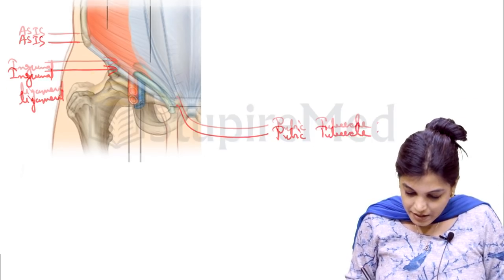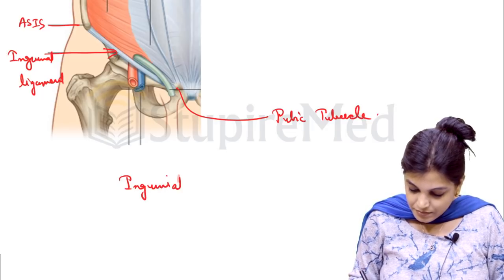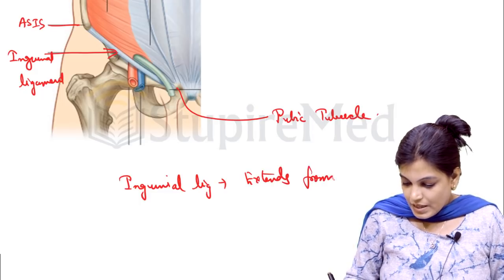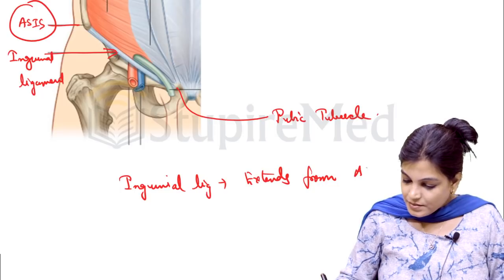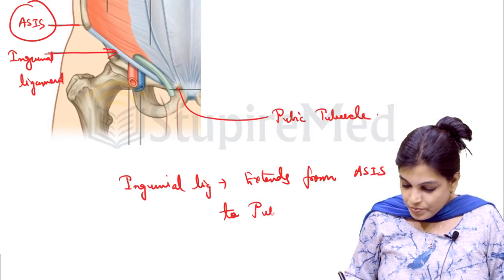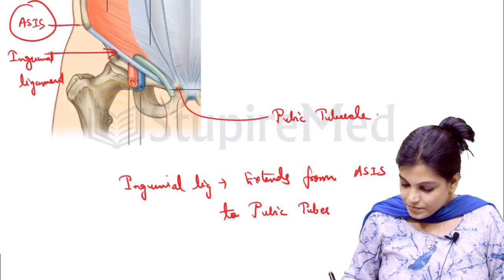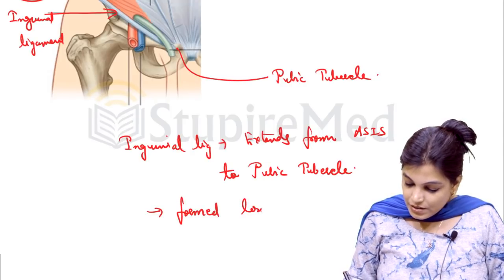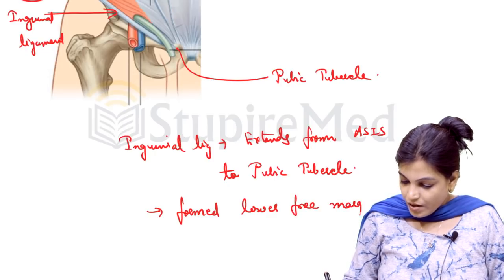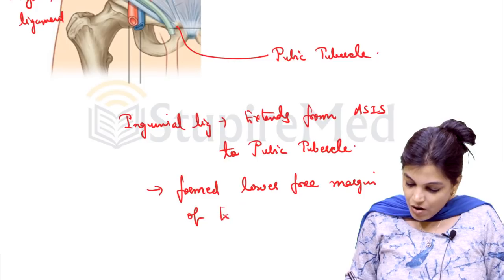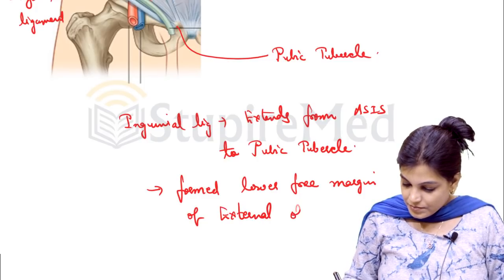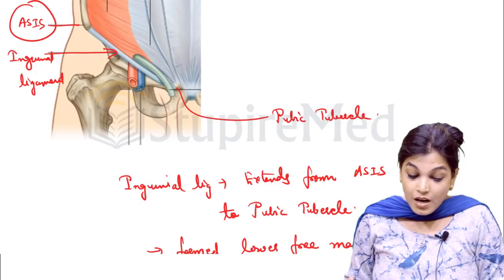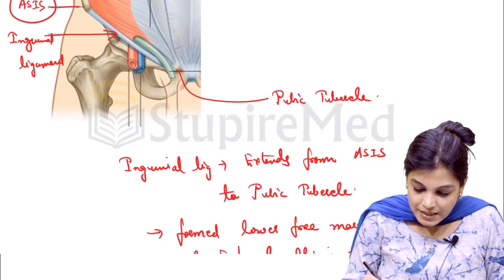The inguinal ligament extends from ASIS to the pubic tubercle, and it is formed by the lower free margins of the external oblique muscle aponeurosis, which actually rolls upon itself to form the inguinal ligament.